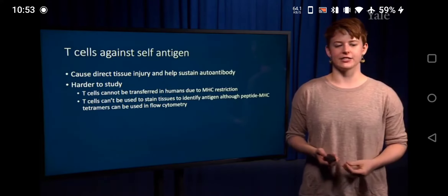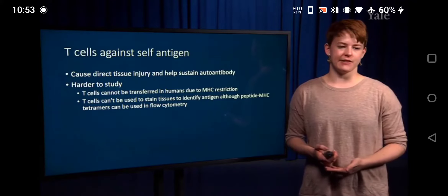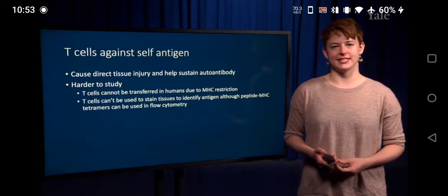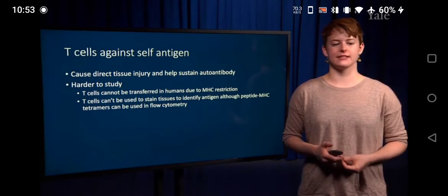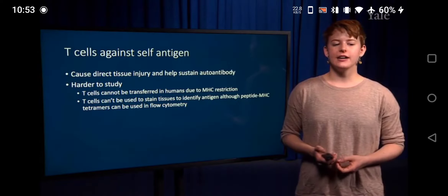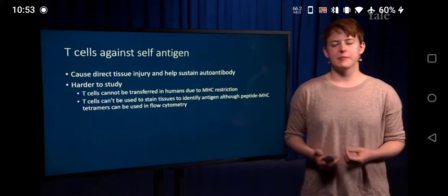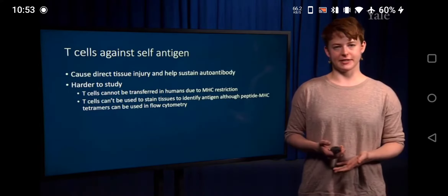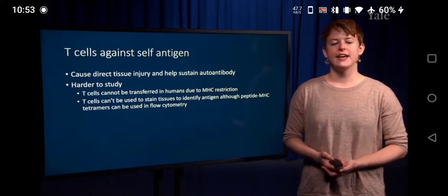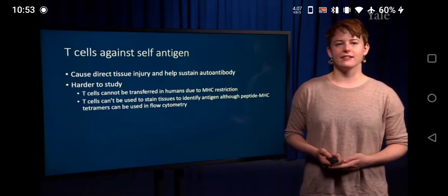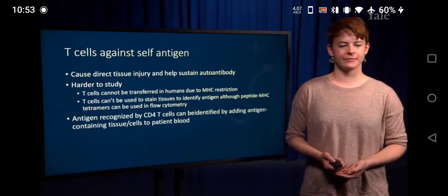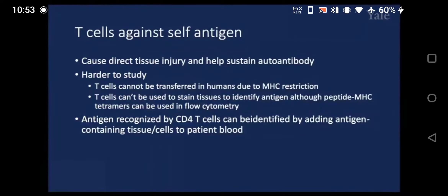There are now some ways to study what T-cells are recognizing using peptide MHC tetramers in flow cytometry, however it's definitely not as straightforward. Antigen recognized by CD4 T-cells can also be identified by adding antigen-containing tissue or cells to patient blood, where we can see the CD4 T-cell response to that antigen.